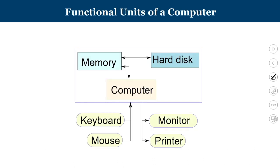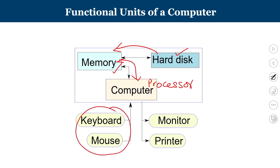Looking at the broader functional units of a computer: a computer works with the help of primary memory, which is volatile — once power is gone, its contents are lost. The hard disk provides permanent storage, and upon requirement, data is moved from the hard disk into main memory. When performing a task, data is transferred from memory into the processor. Input comes from devices like keyboard and mouse, and output is visible on output devices.